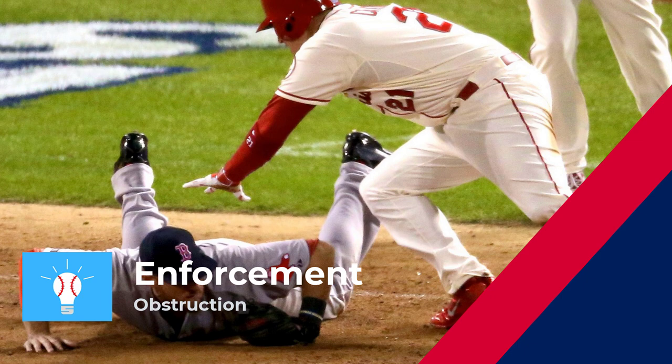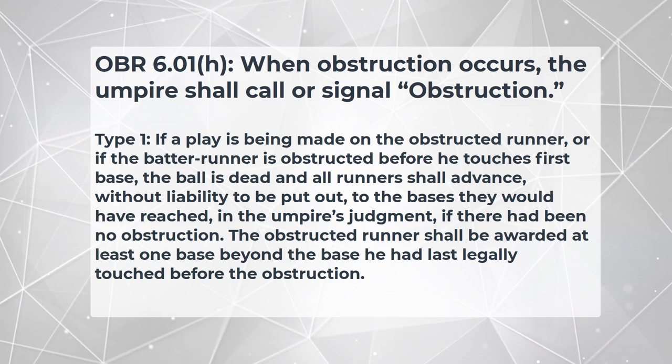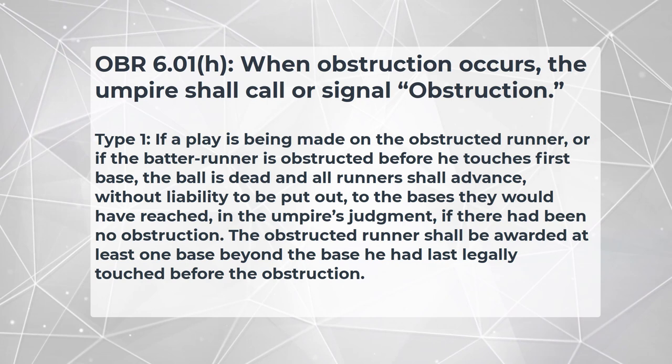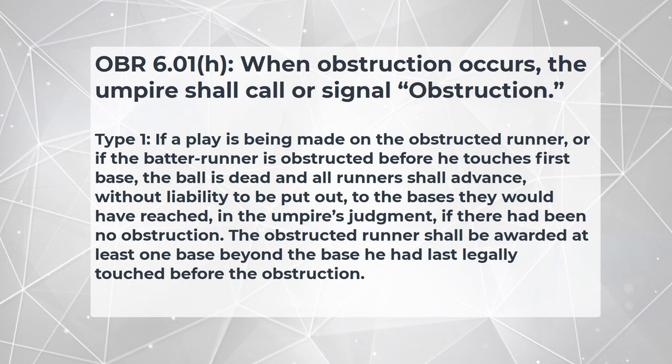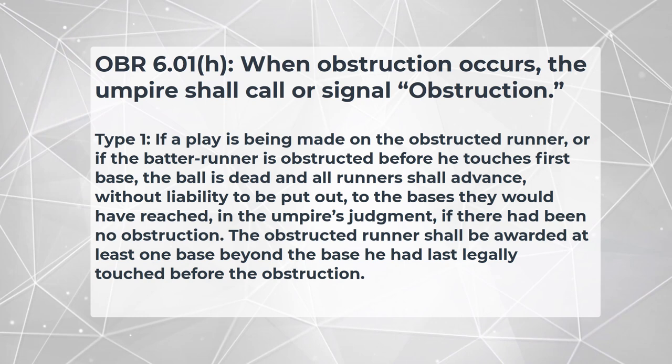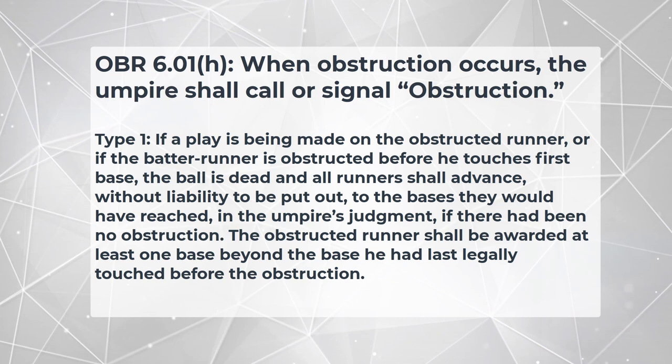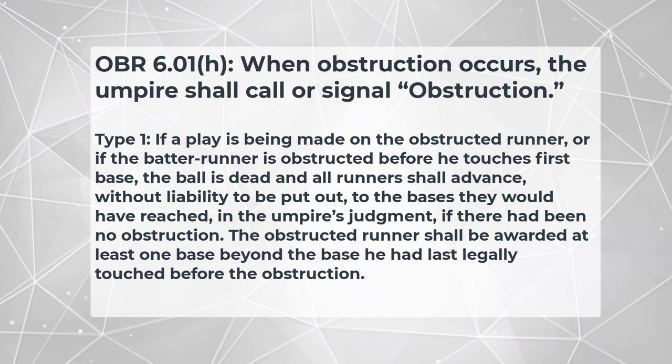We're first going to review the OBR rules for obstruction, because to properly enforce the intent of this rule at the NFHS level, we have to know the ways that OBR allows umpires to interpret it. In OBR rules, there are two different types of obstruction, unlike the one obstruction that we have in high school baseball. OBR 6.01H: when obstruction occurs, the umpire shall call or signal obstruction. Type 1: if a play is being made on the obstructed runner, or if the batter-runner is obstructed before he touches first base, the ball is dead and all runners shall advance without liability to be put out to the bases they would have reached in the umpire's judgment if there had been no obstruction. The obstructed runner shall be awarded at least one base beyond the base he had last legally touched before the obstruction.